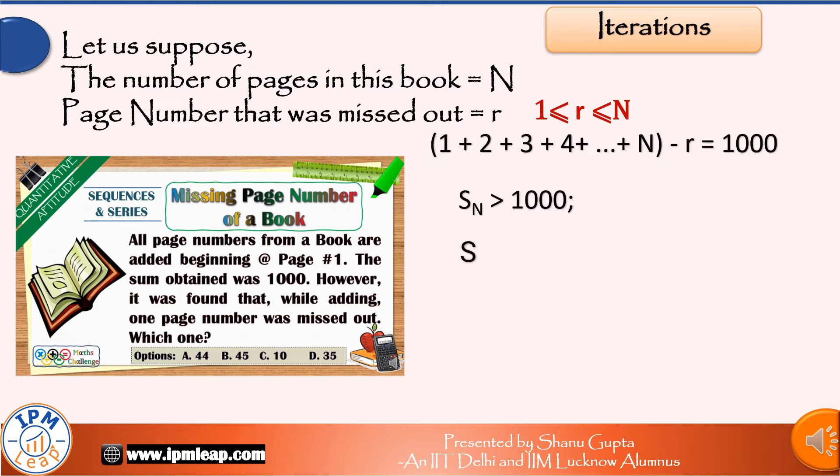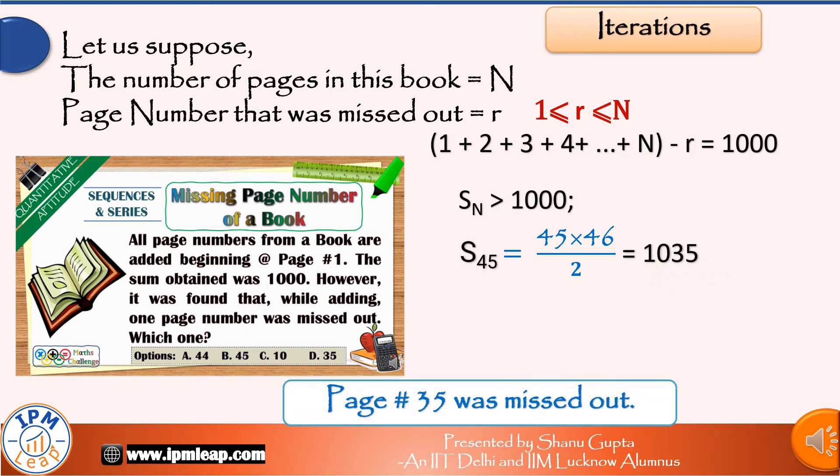S₄₅, the sum of first 45 natural numbers, is 45 × 46 / 2 = 1035. And since one number was missed out of the first n, the sum obtained was 1000. That means 1035 - 1000 = page number 35 was missed out. Next logical question is: could there be another possibility for page number r? Let's find out.